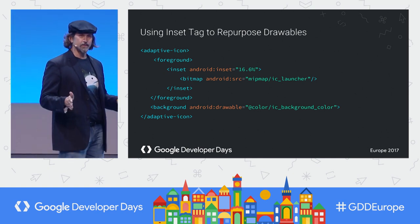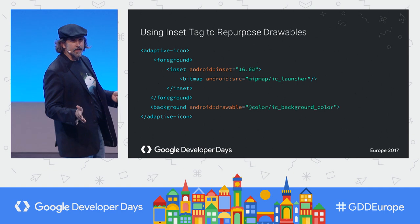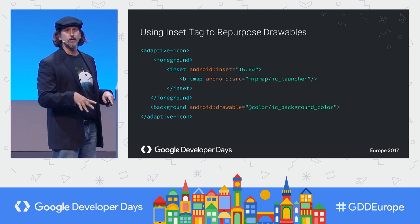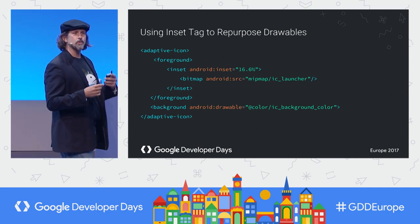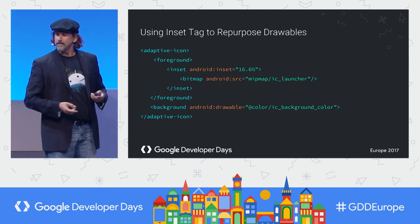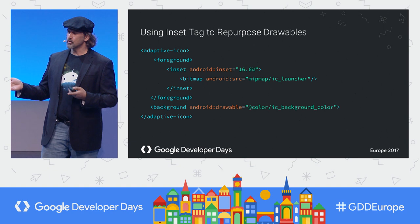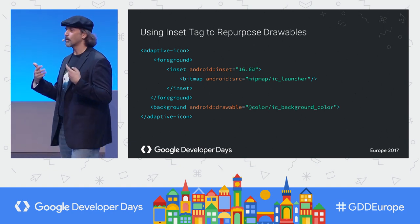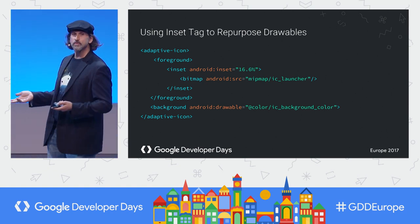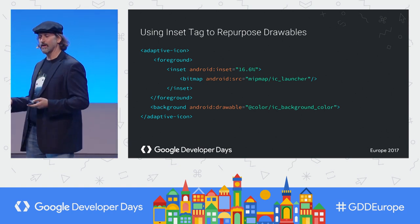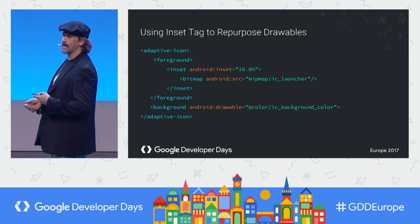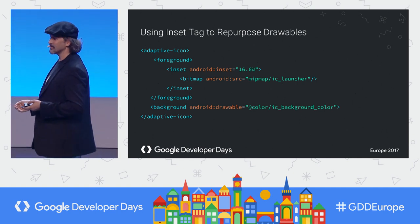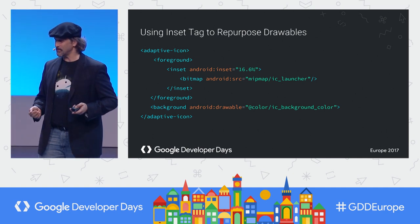Better yet, because these are only used in O, and in Android N the vector drawable became expressive enough to support most of the SVG format, you can now make vector icons, which is really cool.